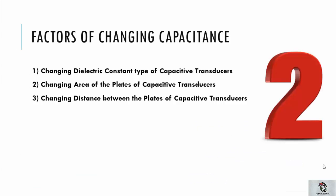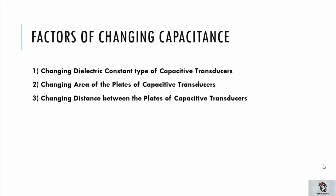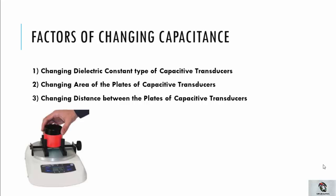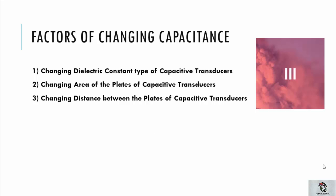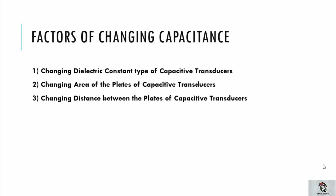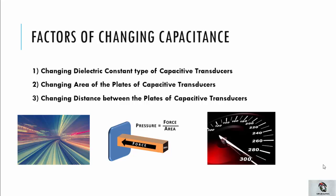The second factor is changing area of the plates. This is used in a torque meter for measurement of torque on a shaft, which comprises sleeves that have teeth cut axially and a matching shaft with similar teeth at its periphery. The third factor is changing distance between the plates. This concept is used for measurement of displacement of an object, where one plate of the transducer is kept fixed while the other is connected to the object. The change in capacitance is measured and calibrated against the input quantity, which is displacement. Quantities like velocity, pressure, and acceleration can also be measured through it.